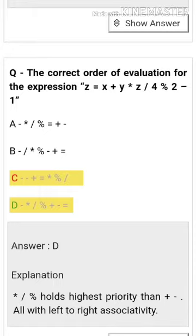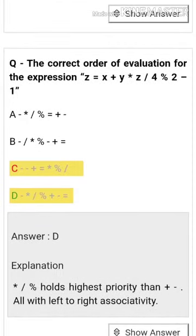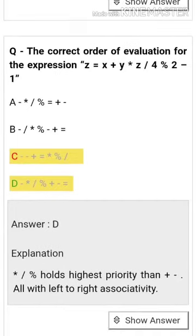What is the correct order of evaluation for the expression j equals x plus y times j divided by four percent two minus one? The answer considers operator precedence: multiply, divide, and percent have highest priority, then plus minus, all with left to right associativity.